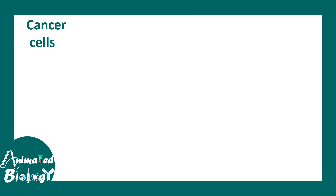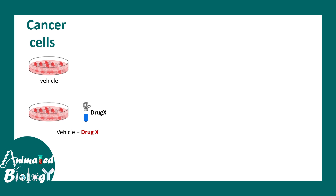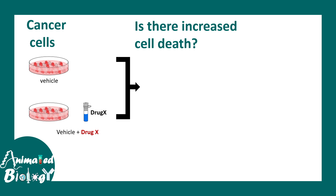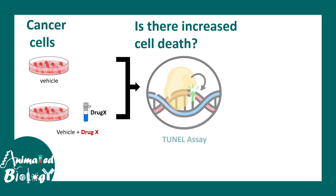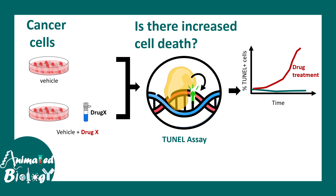Let us try to understand with the help of an example. We have a cancer cell line where we have treated with vehicle, and in another set we have treated with drug X plus vehicle. We wanted to understand whether drug X can fight cancer and kill these cancer cells. For that, we need an assay for apoptosis or increased cell death — TUNEL assay could be an appropriate assay. It is quick, easy, performable, and its readout is pretty clean. We need to understand over time how the number of TUNEL positive cells has increased or decreased. An increase in TUNEL positive cells would be indicative of more apoptosis.